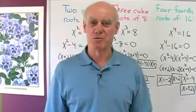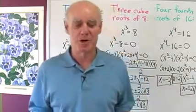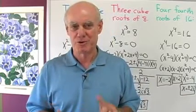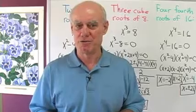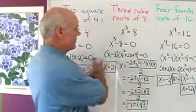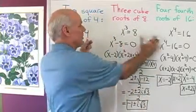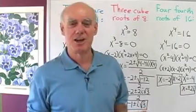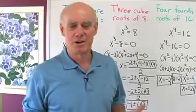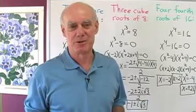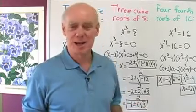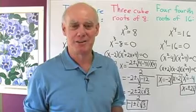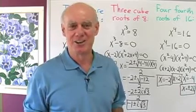Every real number has four fourth roots, and in general every real number has n-th roots — two square roots, three cube roots, four fourth roots, five fifth roots, and so on. We've done a simplified version here, picking numbers so they factor easily. To find all the roots of every number in general, you need a little bit of trigonometry, so look for that topic when you take trigonometry class.